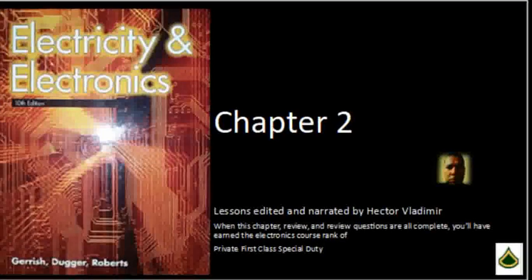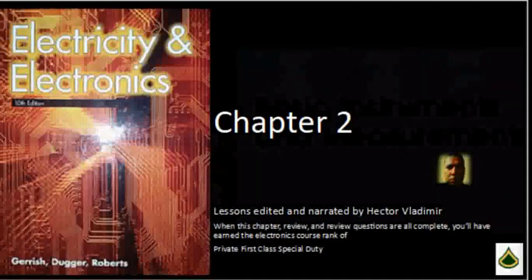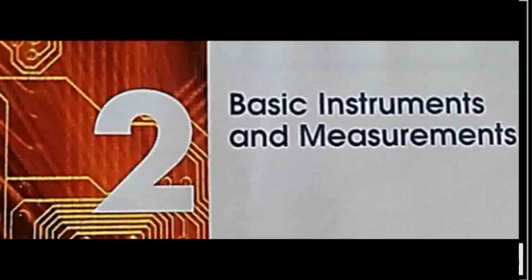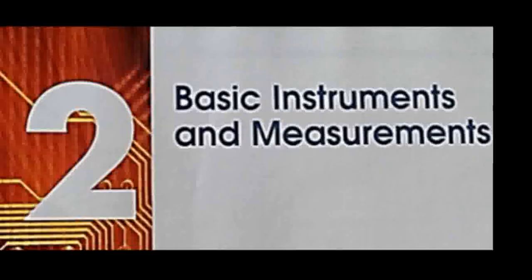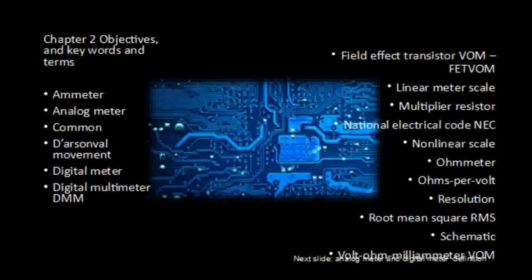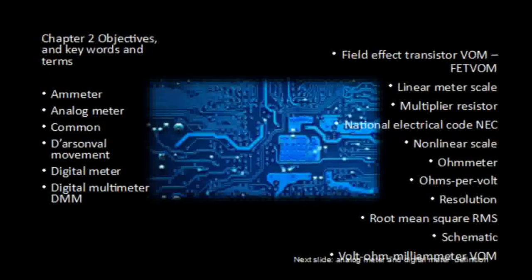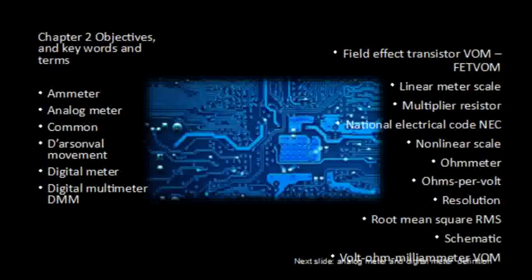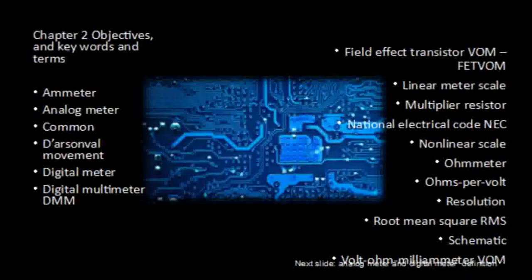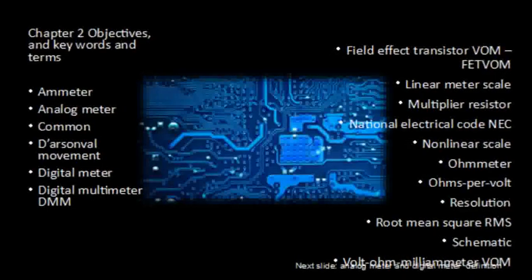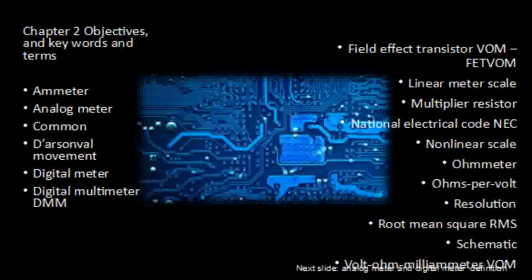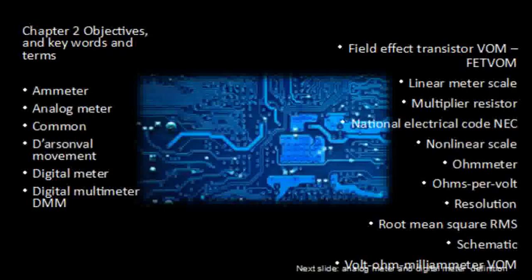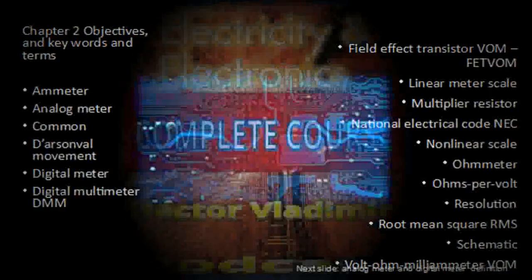Key terms include: amp meter, analog meter, common, D'Arsonval movement, digital multimeter (DMM), field effect transistor, volt-ohm meter (VOM) or FETVOM, linear meter scale, multiplier resistor, and the National Electric Code. Other terms include non-linear scale, ohm meter, ohms per volt, resolution, root mean square (RMS) value, schematic, shunt, and VOM.